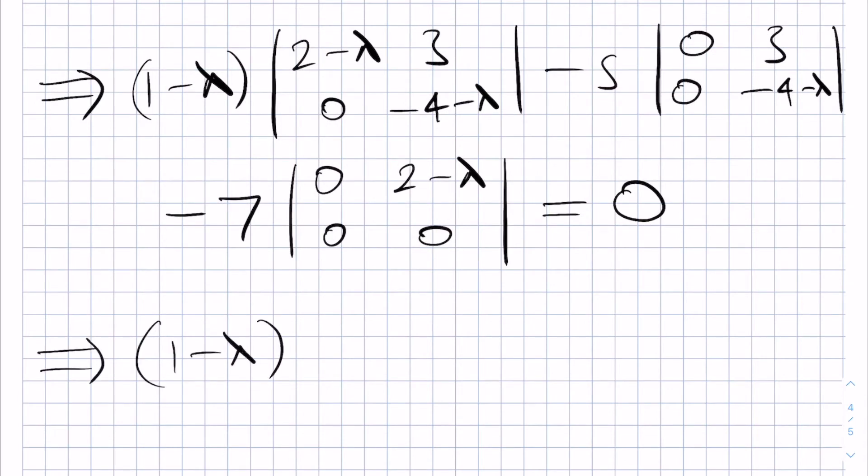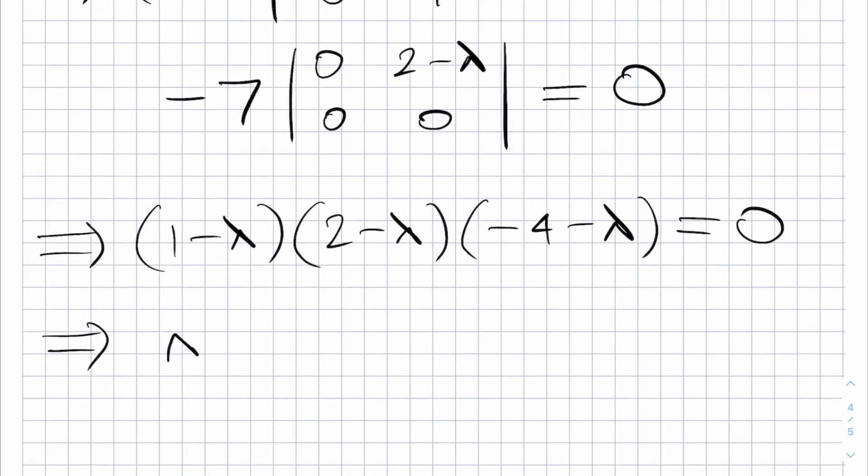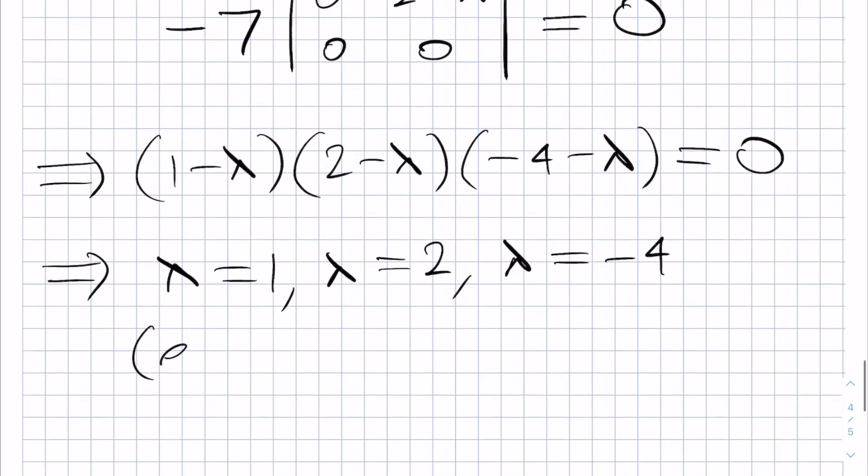We have the 1 minus lambda, the 2 minus lambda and the minus 4 minus lambda giving us 0 as a product. This has the solutions lambda equals 1, lambda equals 2 and lambda equals minus 4 which therefore are the eigenvalues of the matrix A.